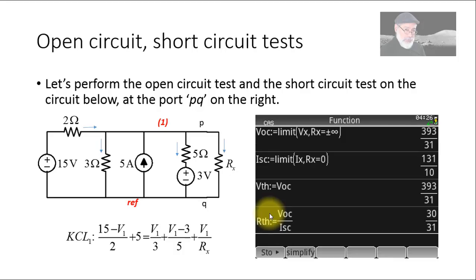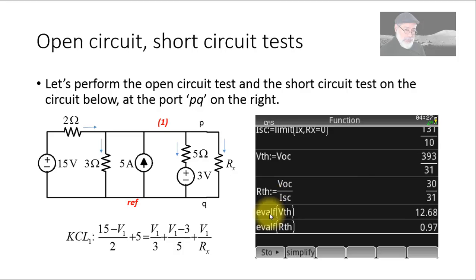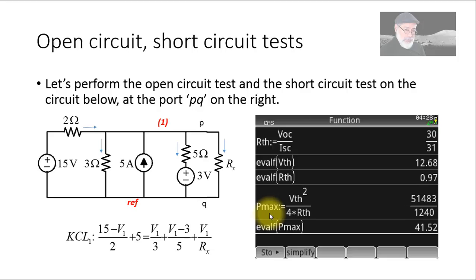Evaluating as a floating point value, Vth is 12.7 volts, and Rth is 0.97 ohms. The maximum power is Vth squared divided by 4·Rth, which evaluates to approximately 41.5 watts.